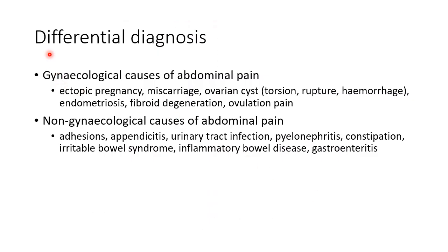The differential diagnosis includes gynecological causes: ectopic pregnancy, miscarriage, ovarian torsion, rupture or hemorrhage of ovarian cyst, endometriosis, fibroid degeneration, and ovulation pain. Non-gynecological causes include adhesions, appendicitis, urinary tract infection, pyelonephritis, constipation, irritable bowel syndrome, inflammatory bowel disease, and gastroenteritis. All these conditions should be ruled out before diagnosing Pelvic Inflammatory Disease.